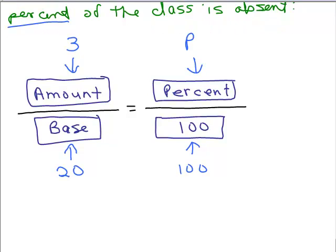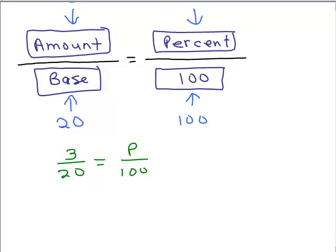So let's write that out. 3 over 20 equals P over 100. Now there's different ways you could figure this out, what P is equal to. But when you're done, remember if somebody asks you what percent, you're going to have to remember to write that number and then write the percent sign afterwards. You could just multiply top and bottom by 5 and figure out that P is going to be 15.